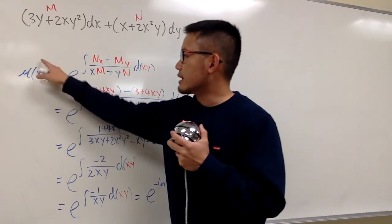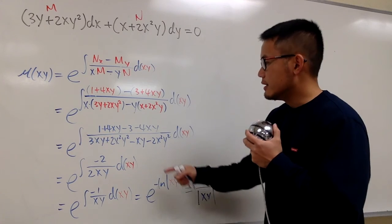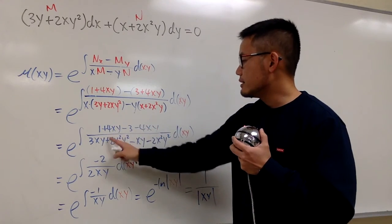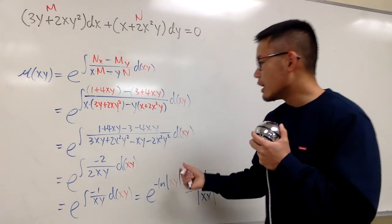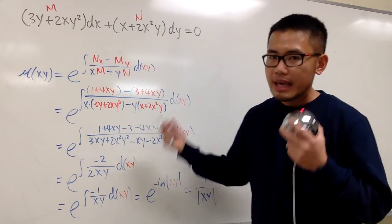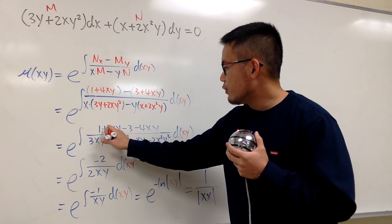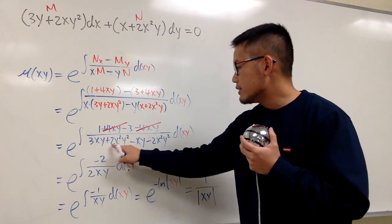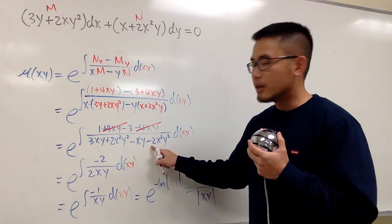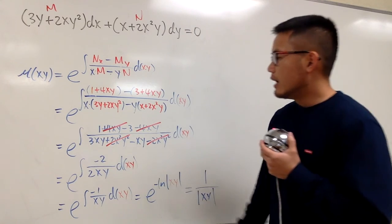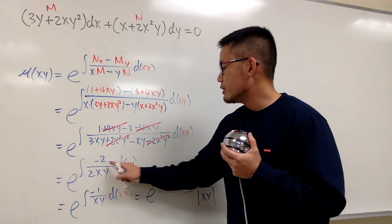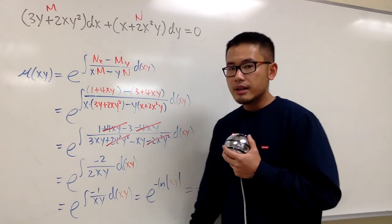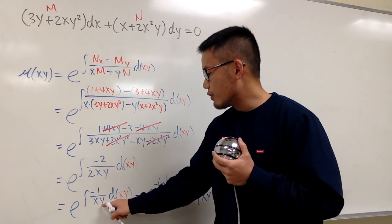If you'd like, you can just say xy is like t. Distribute the negative inside, then distribute the x in the front and the negative y, and this is what we have. Things do cancel out: we have positive 4xy and negative 4xy canceling each other. In the denominator, positive 2x²y² and negative 2x²y² cancel. On top we combine like terms: 1 minus 3 is negative 2, and this is the xy term. We can reduce that to get negative 1 over xy.